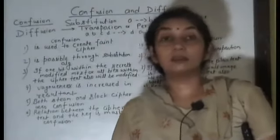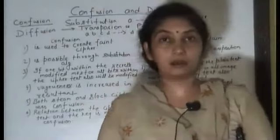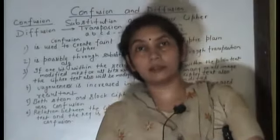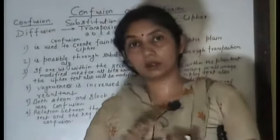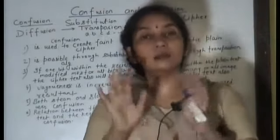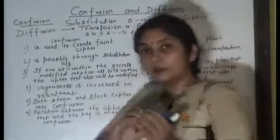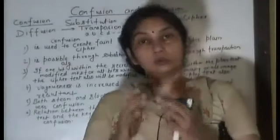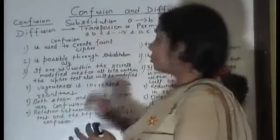The whole subject of your work is to convert plain text into ciphertext. How do you convert plain text? There are different techniques — two types of techniques. One, you use the substitution method, and the other, you use the permutation method. Confusion and diffusion are not different from these. Confusion is also used to convert plain text, and the confusion technique supports the substitution method.